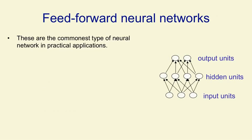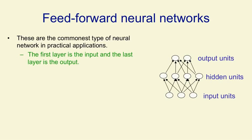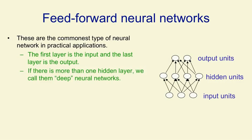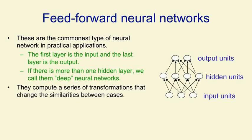The commonest type of neural network in practical applications is a feed-forward neural network. This has some input units in the first layer at the bottom, some output units in the last layer at the top, and one or more layers of hidden units. If there's more than one layer of hidden units, we call them deep neural networks. These networks compute a series of transformations between their input and their output. At each layer you get a new representation of the input, in which things that were similar in the previous layer may have become less similar.